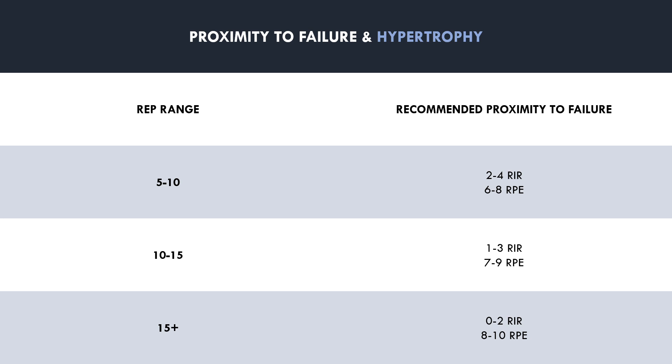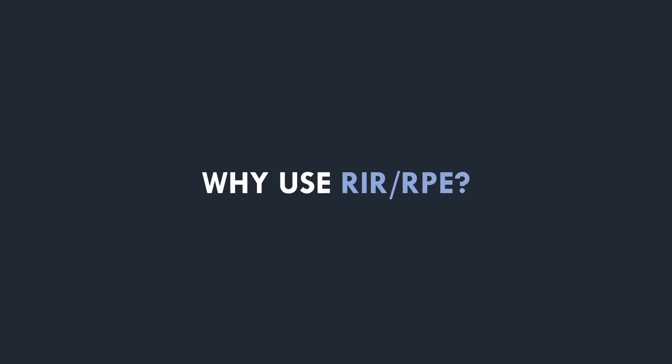So why should we use RIR or RPE in a training program to quantify proximity to failure? The reality is that you don't have to — trainees can still achieve great results without considering these scales. However, these scales allow trainees to quantify how close sets are taken to failure, providing a more structured prescription of this variable. There are also two primary benefits of implementing auto-regulatory systems into your training.